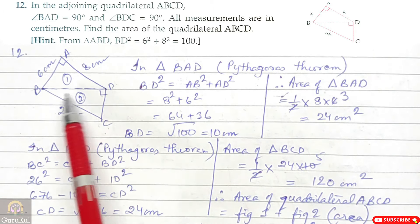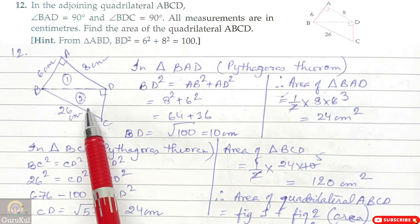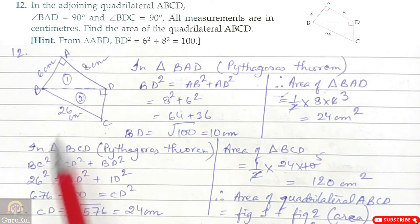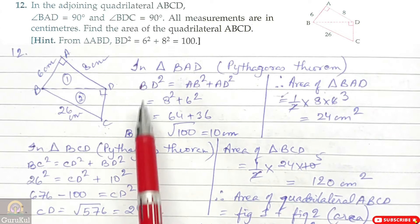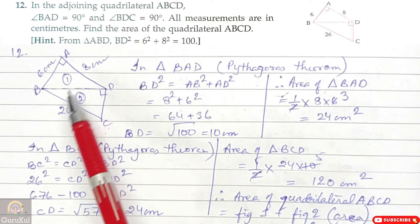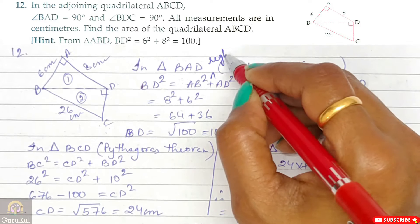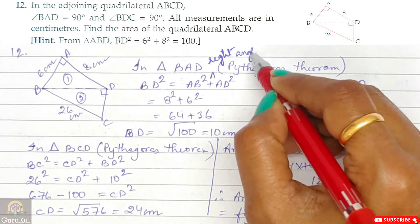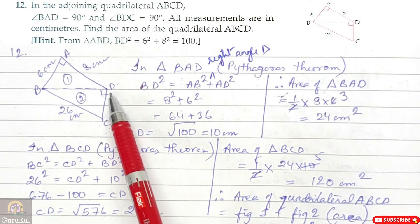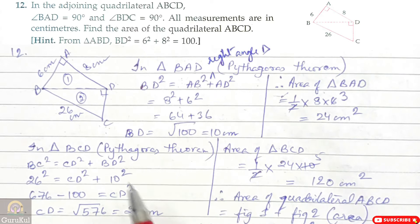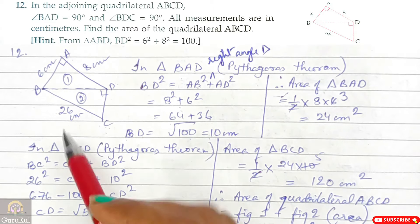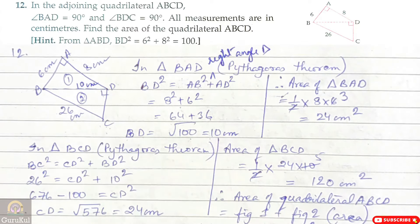We have divided the figure with a dotted line into figure 1 and figure 2: triangle BAD and triangle BCD. In triangle BAD, which is a right angle triangle because angle A is 90 degrees, following Pythagoras theorem: BD² = AB² + AD² = 6² + 8² = 36 + 64 = 100. Hence BD = √100 = 10 cm.